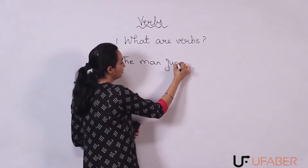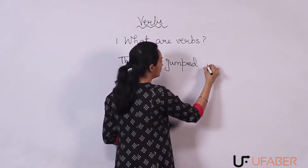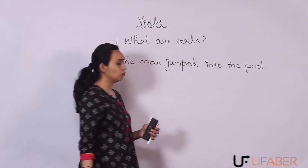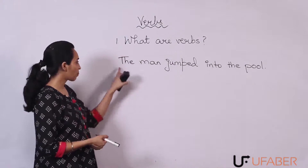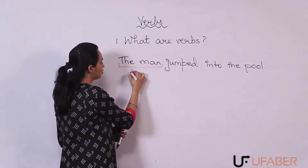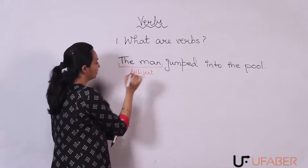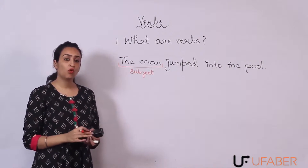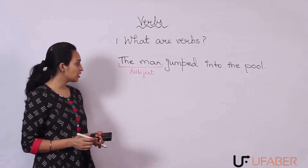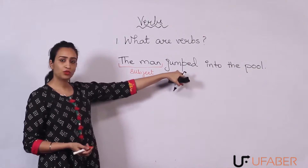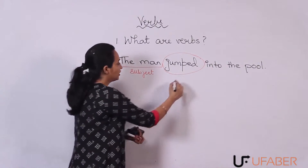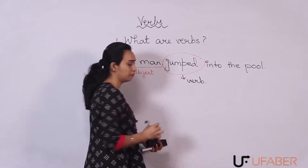The man jumped into the pool. Here, the subject would be 'the man' — this is your subject. Any word which will tell you what the subject is doing will be your verb. For example, if I ask you what is the man doing, you would say he is jumping or he jumped. So this is your verb.